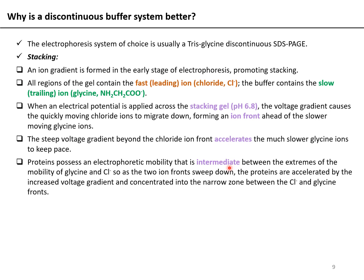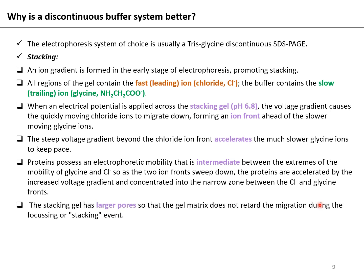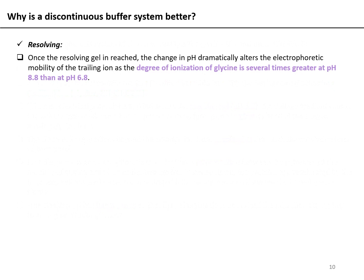Proteins possess an electrophoretic mobility intermediate between the two extremes. As the glycine and chloride fronts sweep down, a narrow zone is created between them where the proteins get concentrated. The stacking gel has larger pores — lower acrylamide percentage — so there is no sieving action during stacking. As a result of this stacking, all proteins are now starting at the same point when they enter the resolving gel.